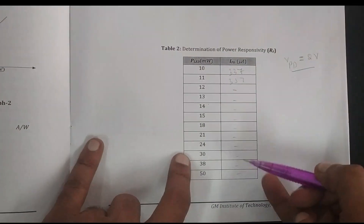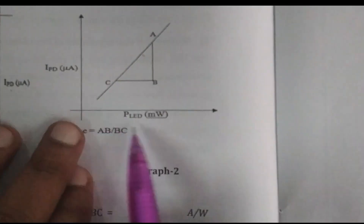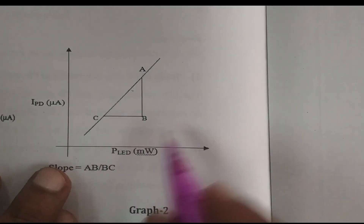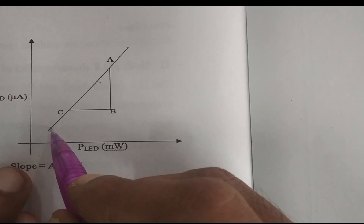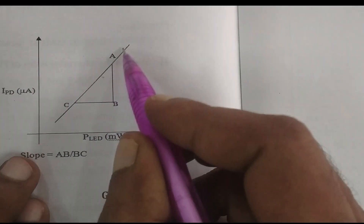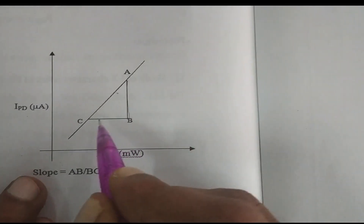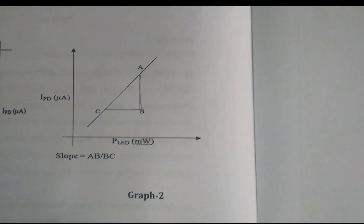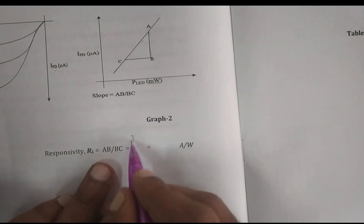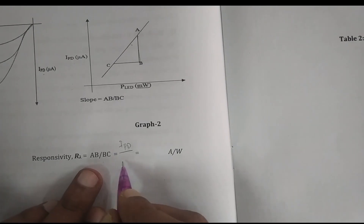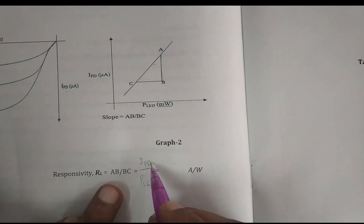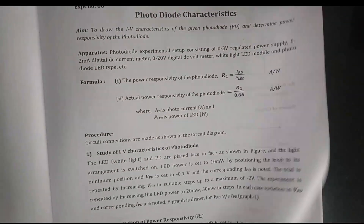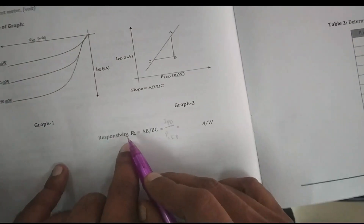Once you have all the readings, plot the graph of I_PD versus LED power, with I_PD along the y-axis and power of LED along the x-axis. As LED power increases, the photodiode current I_PD also gradually increases. From this plot, find the slope, calculated as AB divided by BC, where AB gives the I_PD value and BC gives the power of LED. This ratio of I_PD to power of LED is the power responsivity — this slope is directly the power responsivity of the photodiode.